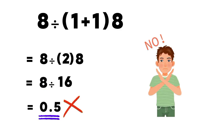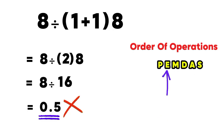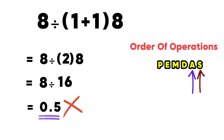But this answer is not correct, because when we use the order of operations, we must do parenthesis first, then exponents, then multiplication or division, and finally addition or subtraction. Remember, multiplication and division have the same priority, and we always work from left to right. The same rule applies to addition and subtraction.